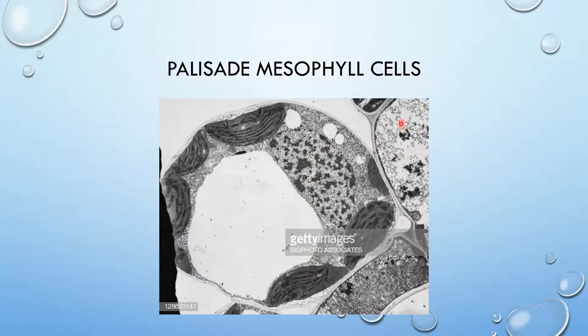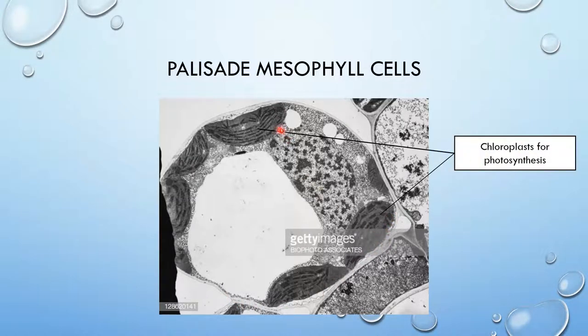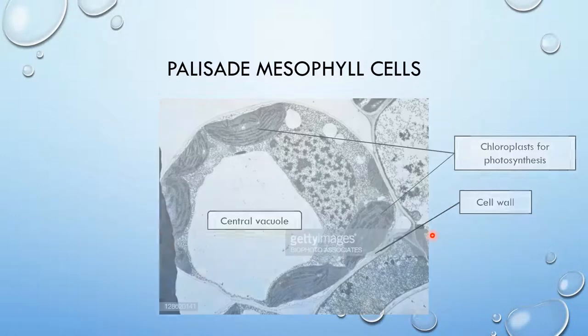That is a micrograph of palisade mesophyll cells. Try to see if you guys could identify the organelles. I would say these are little vesicles. That's the nucleus. Chloroplast. Did I say nucleus? Yeah, nucleus and that's the central vacuole. And then it has a cell wall because it's a plant cell, probably a cell membrane inside it. Let's see if I'm right. Those are chloroplasts for photosynthesis and they have black stains, the starch grains. The cell wall. The central vacuole.